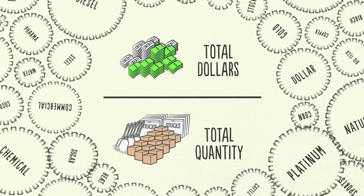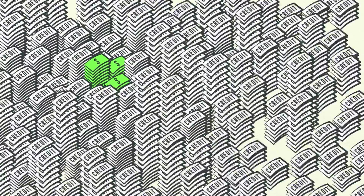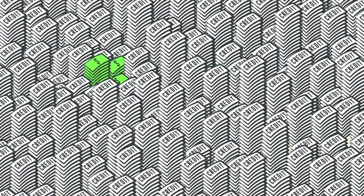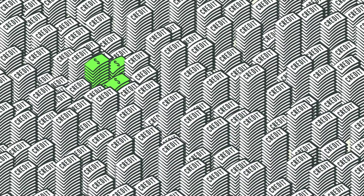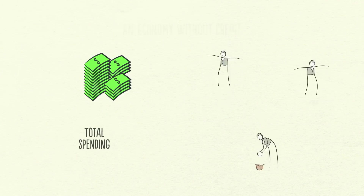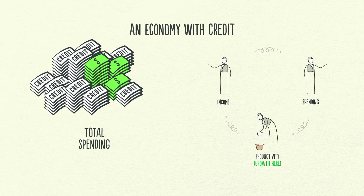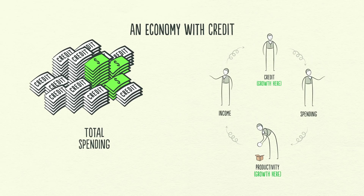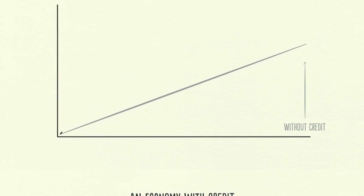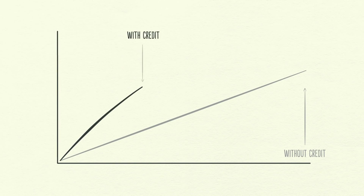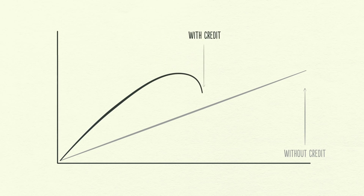The reality is that most of what people call money is actually credit. The total amount of credit in the United States is about $50 trillion and the total amount of money is only about $3 trillion. In an economy without credit, the only way to increase your spending is to produce more. But in an economy with credit, you can also increase your spending by borrowing. As a result, an economy with credit has more spending and allows incomes to rise faster than productivity over the short run, but not over the long run.